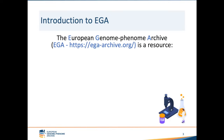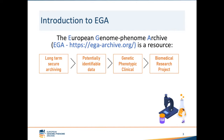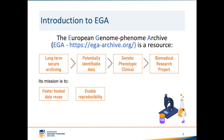EGA is the European Genome-Phenome Archive. It is a resource for long-term secure archiving of potentially identifiable data — specifically genetic, phenotypic, and clinical data generated by biomedical research projects. The mission of EGA is to foster data reuse, enable reproducibility, and accelerate translational research.